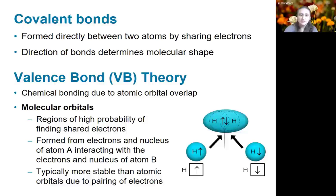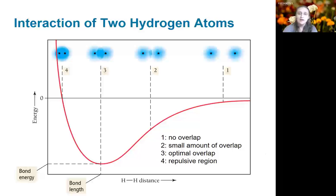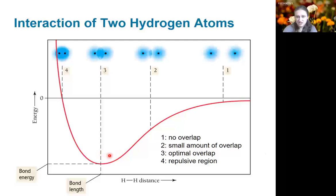Here's an example for the hydrogen molecule, where we have two hydrogen atoms with unpaired electrons that come together to form a bond with a pair of electrons. Typically, the molecular orbital is more stable than the separated atomic orbitals due to this pairing of electrons. We can also look at the interaction of two hydrogen atoms as a function of distance. As they come closer together, they get more and more overlap until they reach the minimum possible energy. This optimal distance, where they have the best overlap and the least repulsion, is what we refer to as the bond length, and the minimum energy is the bond energy.